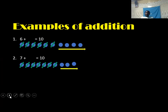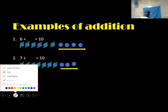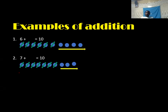Number one: we have six plus an unknown number, and the answer is ten. Six plus the number we don't know equals ten. To find the unknown number, you count ten balls. After you have counted ten balls, you take away six balls.